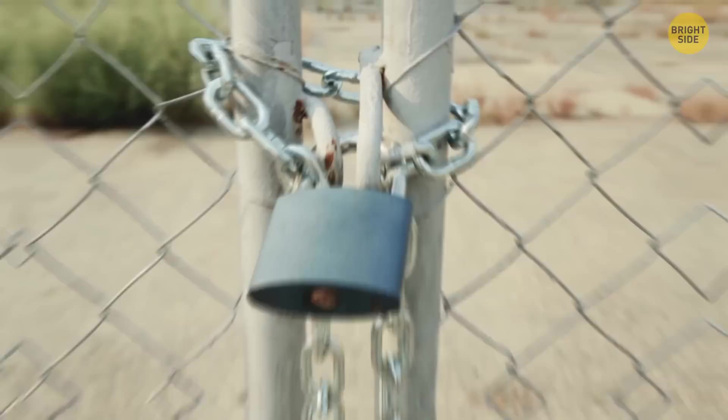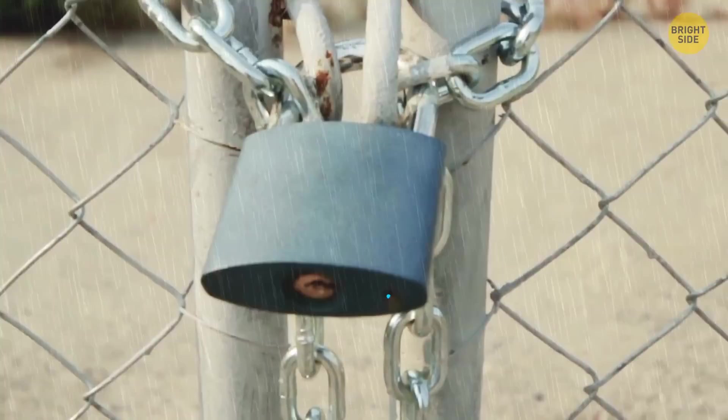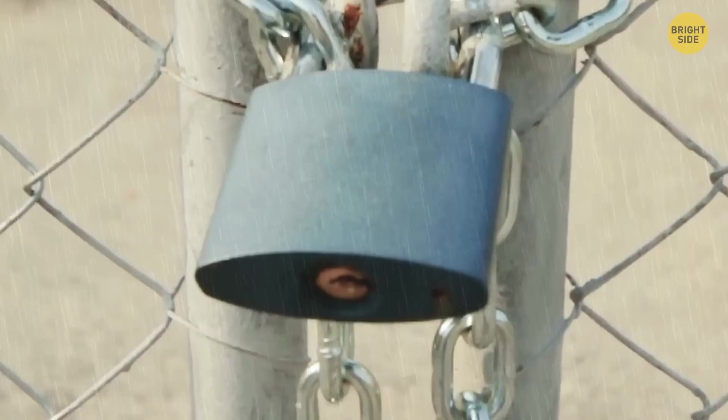Ever notice that tiny hole on the bottom of a padlock? Its hidden purpose is to drain water out to keep it from rusting. It's also the place to lubricate a padlock. A drop of oil in there will make it open and close way easier.